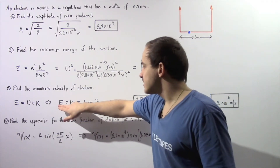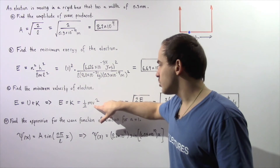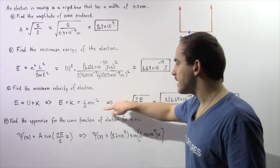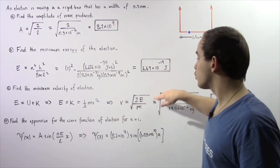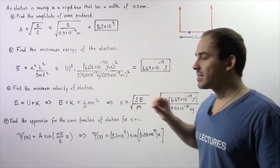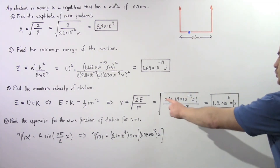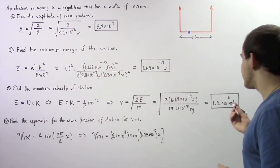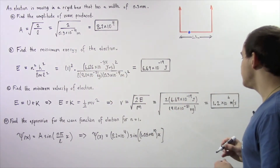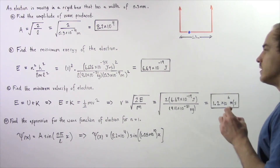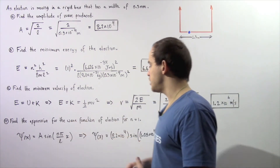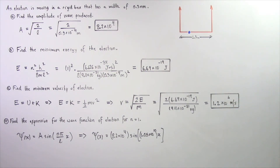Let's set E equal to this quantity and rearrange to solve for the velocity. The velocity equals the square root of 2 multiplied by the energy found in part B divided by the mass of our electron in kilograms, which gives us about 1.2 times 10 to the 6 meters per second. Notice that if we increase the energy, we increase the velocity.